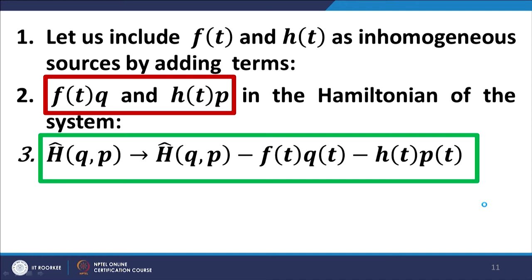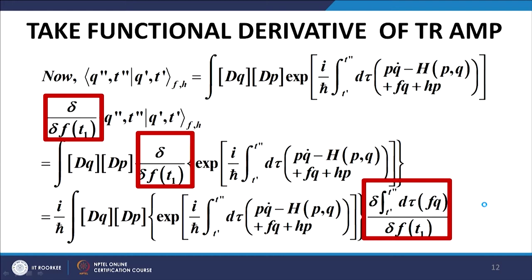These two expressions F(t) and H(t) represent classical inhomogeneous sources, and to incorporate their impact we adjust the Hamiltonian to the form given in the green box. Now, we take the functional derivative of the transition amplitude. The transition amplitude is defined as before — the dotting of the final state with the initial state — with the source terms retained in the Hamiltonian. We take the functional derivative of this expression with respect to f at time point tᵢ. Let us carefully trace the movement of this functional derivative across the path integral or functional integral.